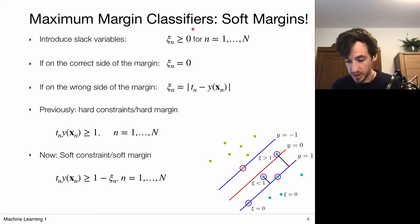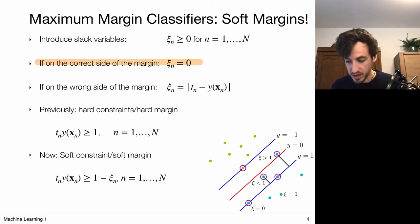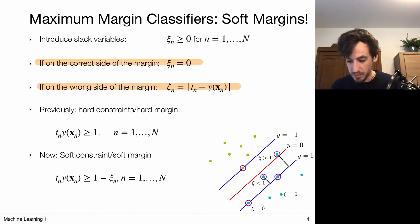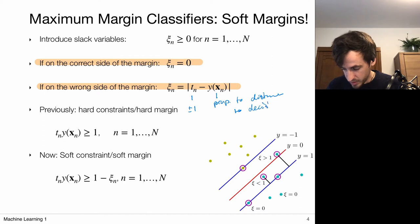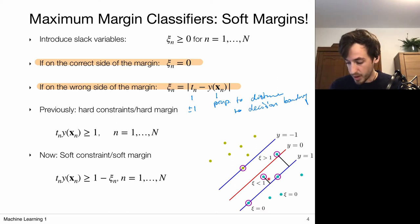Let's capture this in equations. We introduce the slack variables ψ_n, which represent the penalties assigned to each data point. Points on the correct side of the margin get ψ_n = 0, while points on the wrong side get a penalty proportional to their distance to the margin. Recall that y_n is proportional to the distance of a point to the decision boundary and t_n is either +1 or −1. When a point falls exactly on the margin this evaluates to one. Points on the wrong side of the margin get a positive value assigned.